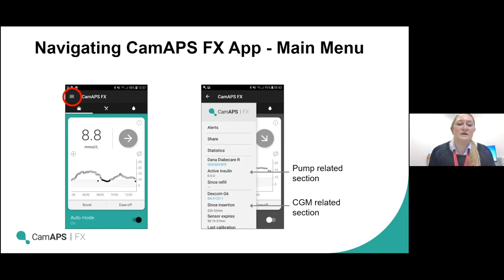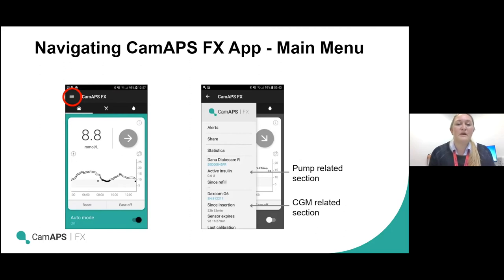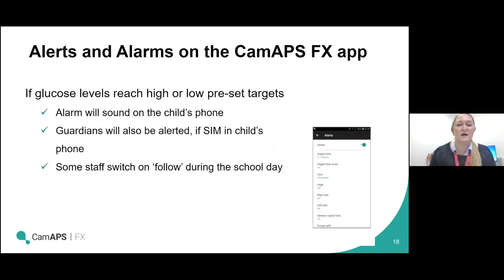On the home screen, the three lines at the top left take you to an additional drop-down menu. The things that are good to know are the very top two: the alert menu and the shares menu. The alert menu has the sensor app embedded within the closed loop app, meaning all the usual alerts and alarms from a continuous glucose monitoring system can be set within the app. Most children will have alerts and alarms preset by parents at different levels relative to what they require.